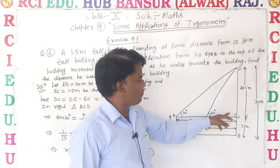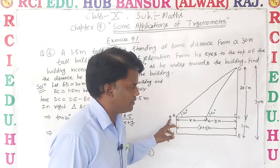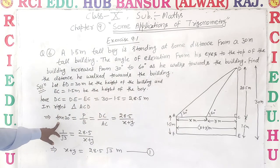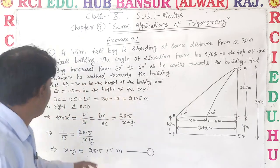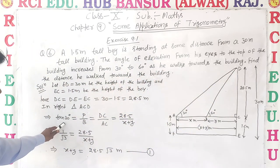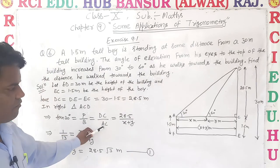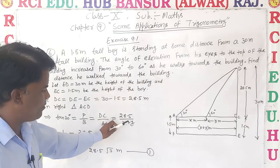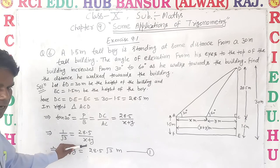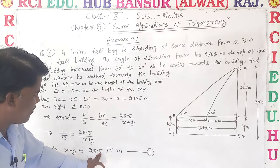We know the side opposite the 90-degree angle is the hypotenuse, the side opposite the given angle is the perpendicular, and the rest is the base. Which trigonometric ratio involves perpendicular and base? Tan. In right triangle ACD with angle 30 degrees, tan 30 equals DC upon AC, which is 28.5 upon x plus y. So 1 upon root 3 equals 28.5 upon x plus y. Cross multiplying: x plus y equals 28.5 root 3 meters — Equation 1.